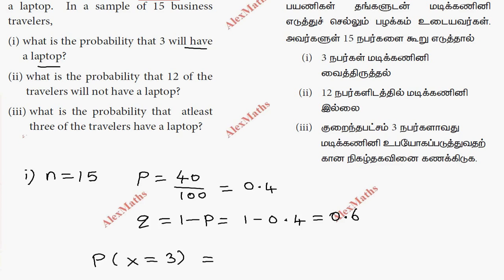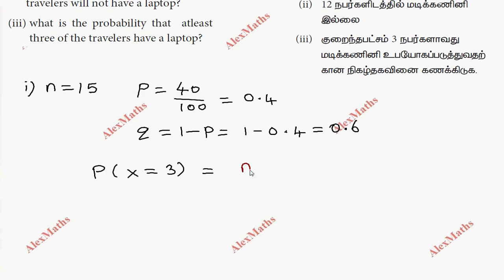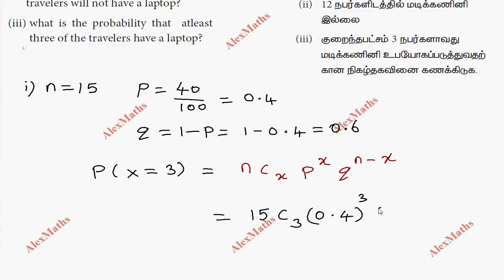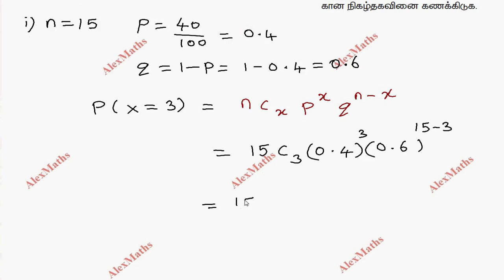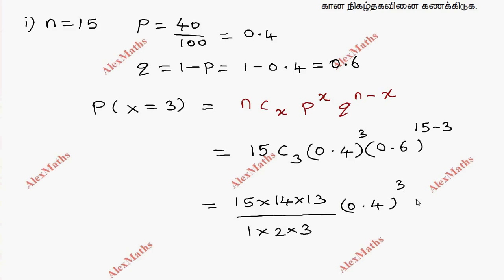Using the binomial formula: P(x) = nCx × p^x × q^(n−x). We substitute: 15C3 × (0.4)^3 × (0.6)^(15−3). That gives 15C3 × (0.4)³ × (0.6)^12.